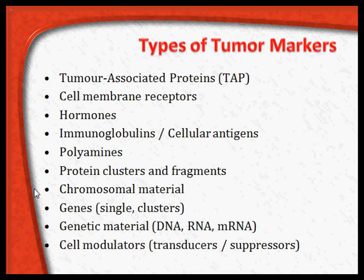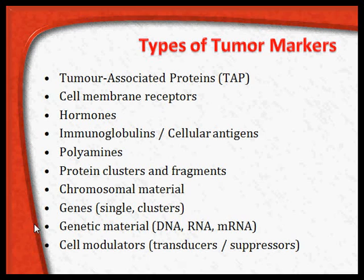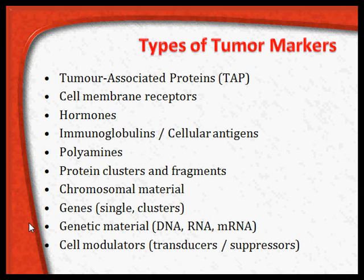For chromosomal material, the best example is the Philadelphia chromosome in chronic myeloid leukemia. There may also be parts of the genetic material like RNA, DNA, or messenger RNA. Sometimes there may be cell modulators like cell transducers or cell suppressors. Tumor markers can belong to any one or more of these different categories.